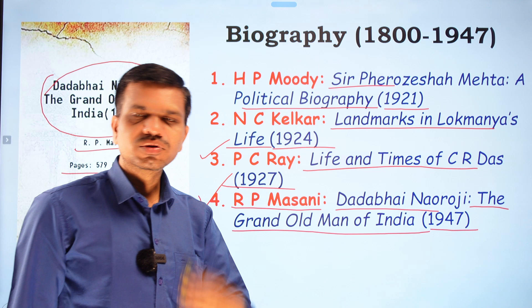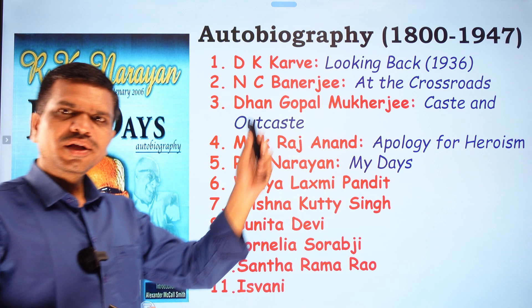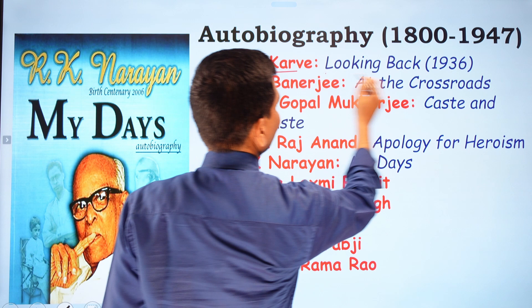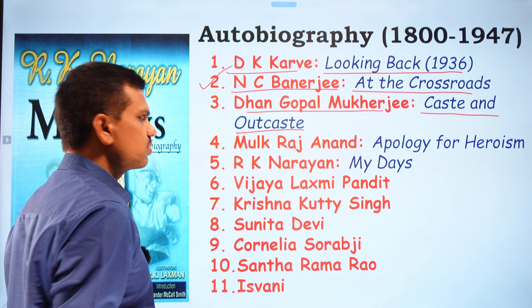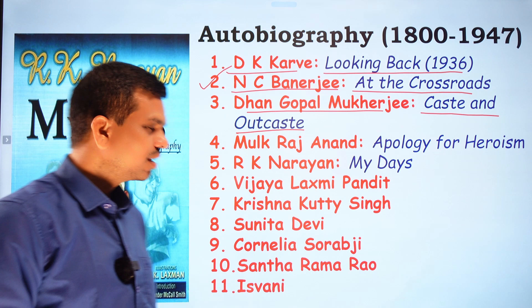Moving to autobiographies, we have D.K. Karve's Looking Back (1936), N.C. Banerjee's At the Crossroads, and Dhan Gopal Mukerji's Caste and Outcast. These are important early autobiographies in Indian English literature.